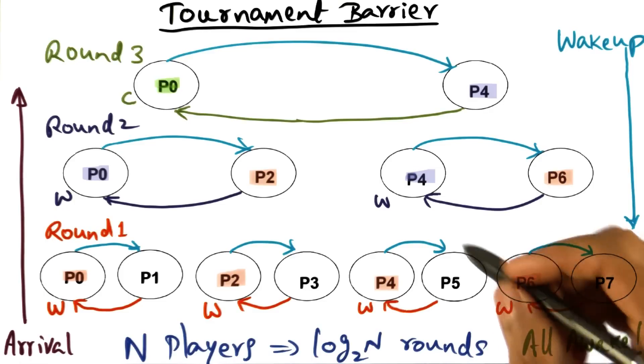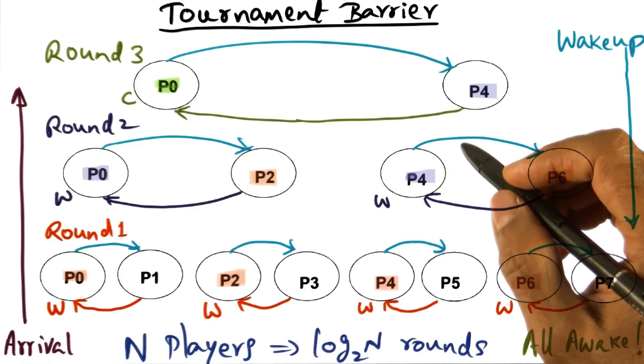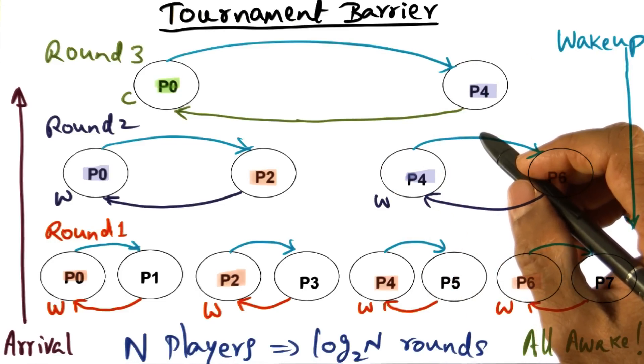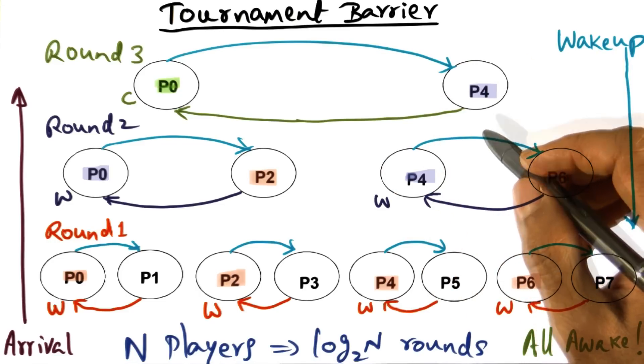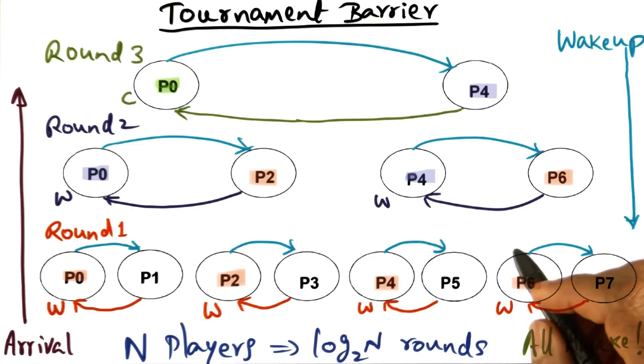You would immediately notice that there's a lot of similarity between the tournament algorithm and the sense reversing tree algorithm, and also similarity to the MCS algorithm. So let's talk about the difference between the tree barrier and the tournament barrier first.